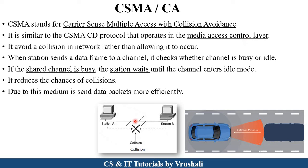First, let's understand what collision is. Here in this diagram, station A and station B — both devices are connected by using the same channel or the same cable. Station A sends information using that cable, and station B also sends information using that same cable at the same time. So at that point, a collision occurs. This is called a collision.